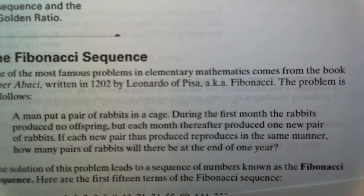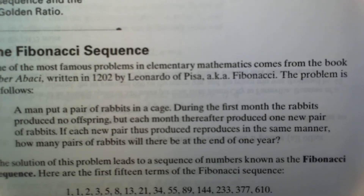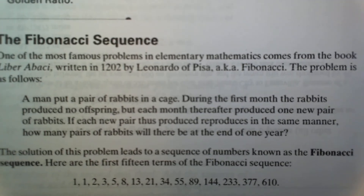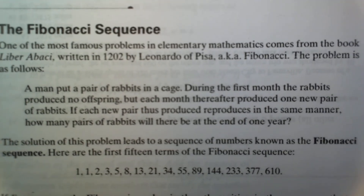The solution of this problem leads to a sequence of numbers known as the Fibonacci sequence. The first 15 terms of the Fibonacci sequence are 1, 1, 2, 3, 5, 8, 13, 21, and so on up to 610.